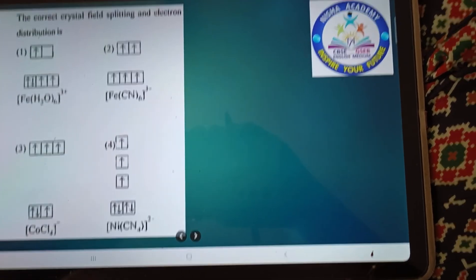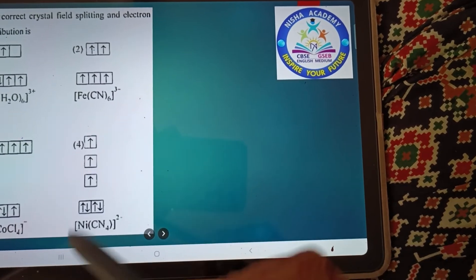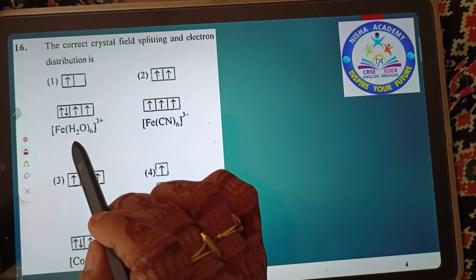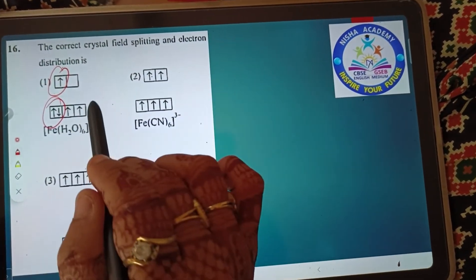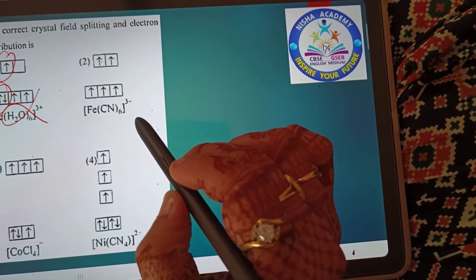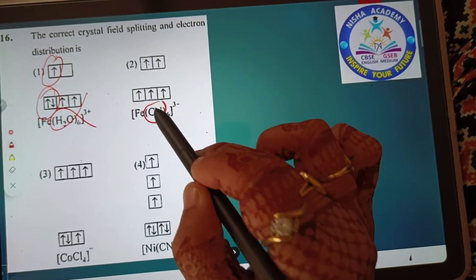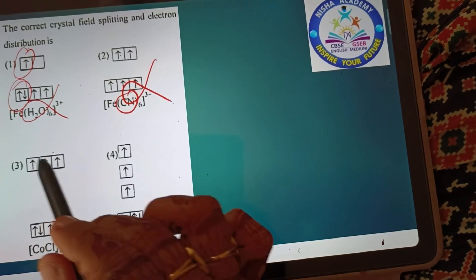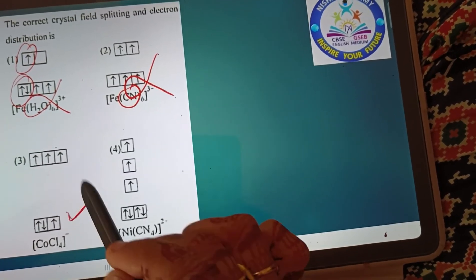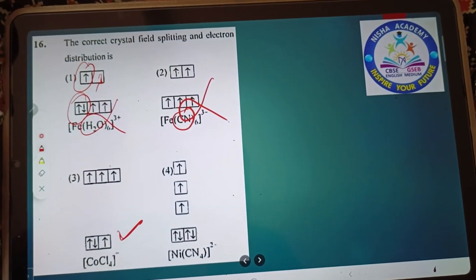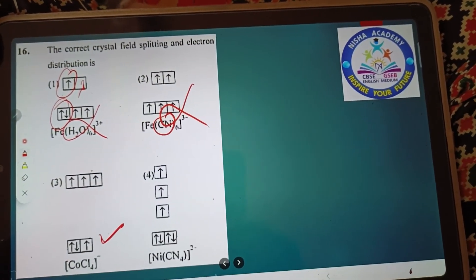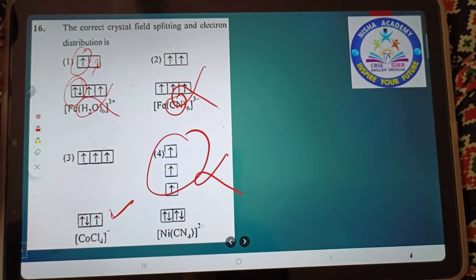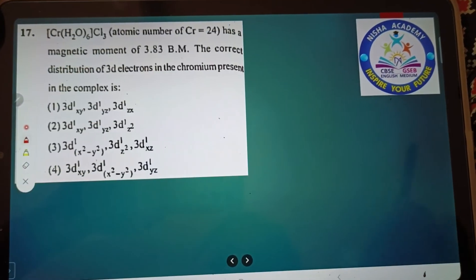The magnitude of crystal field stabilization energy - this theory question is from what we learned. The correct crystal field splitting and electron distribution: if ligand is strong, pairing occurs below. If ligand is weak, splitting happens and electrons go up. When ligand is strong, splitting energy is more than pairing energy.